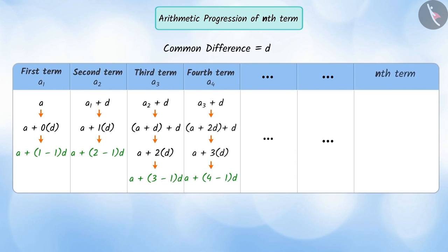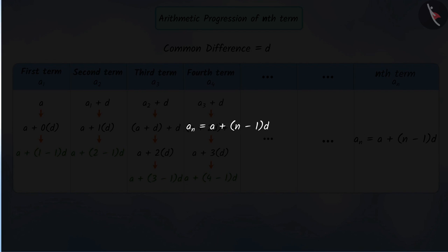Proceeding in the same order, we can express the nth term An as a plus (n minus 1) multiplied by d. It is the nth term of AP where a is the first term and d is the common difference. Here, An is called the general term of an arithmetic progression.